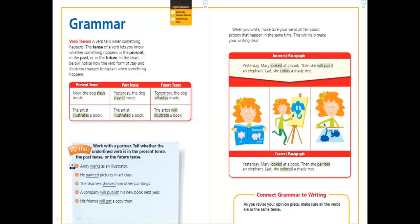Future. Tomorrow the dog will stay inside. The artist will illustrate a book. Those two examples using will plus the infinitive, will stay, will illustrate, indicate that something will happen in the future, later on, maybe tomorrow, next week, next year, next month, or any tense that will happen in the future.